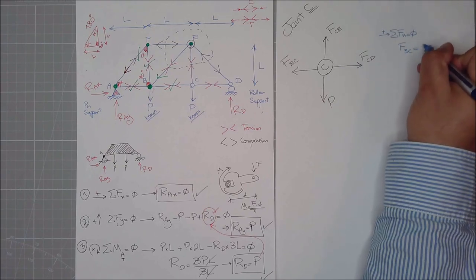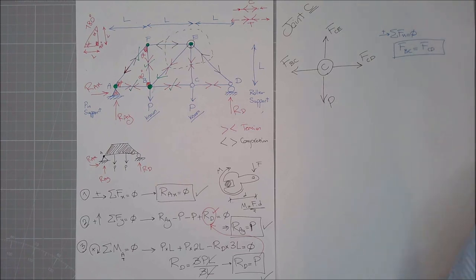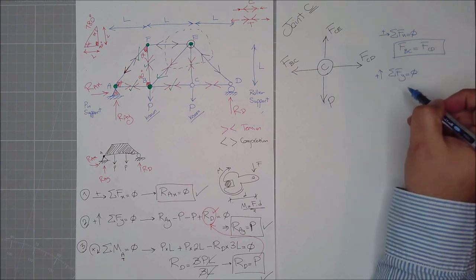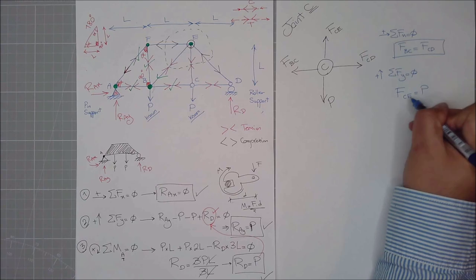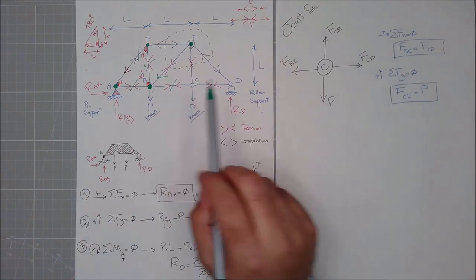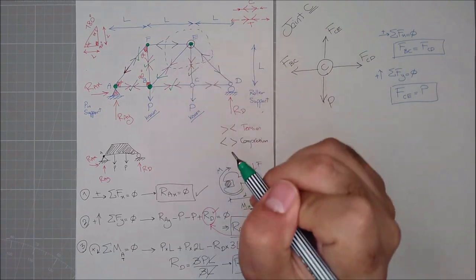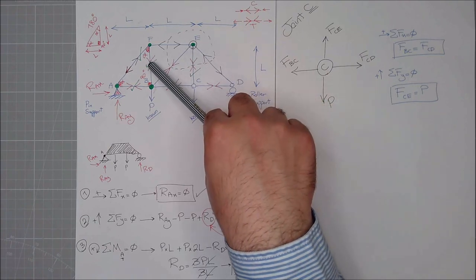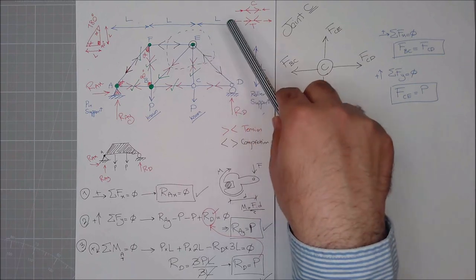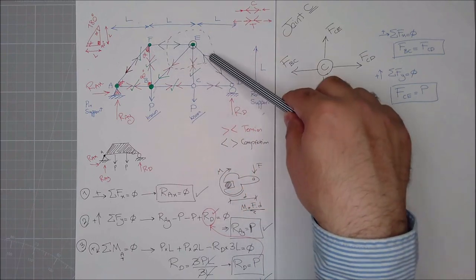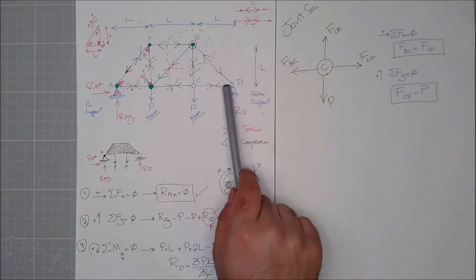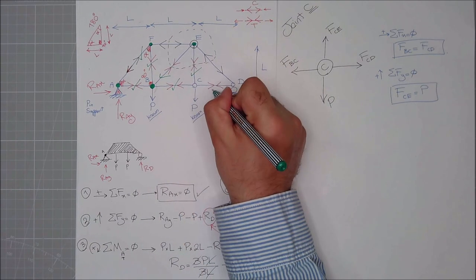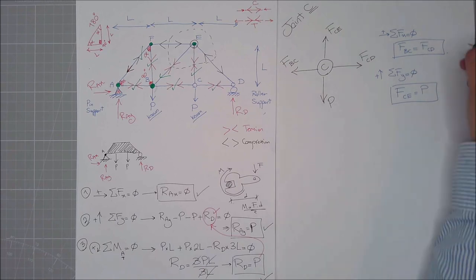Summation of all forces in X direction equals to zero, this direction positive: FBC equals FCD. Summation of all forces in Y direction equals to zero, going upward: FCE equals P. So I've figured out FCE. Now I just need one more to solve for E. Since I already have FBC, I know FCD as well. If I know FBC and FCE, I can resolve all remaining unknowns at joint E.